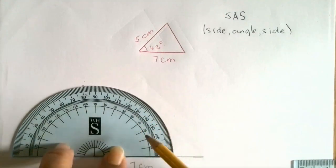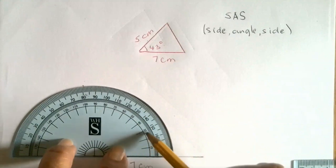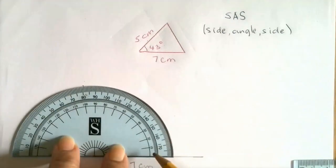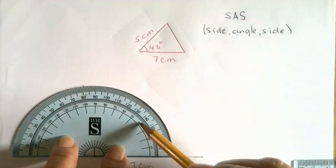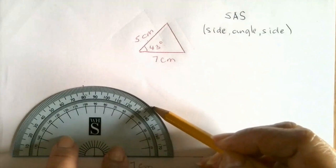So when you measure the angle, start from where it's just zero on this side and not on the other side because that's going to be the zero start from the other side. So measure 43 degrees, so that's 40 and 43 somewhere there.